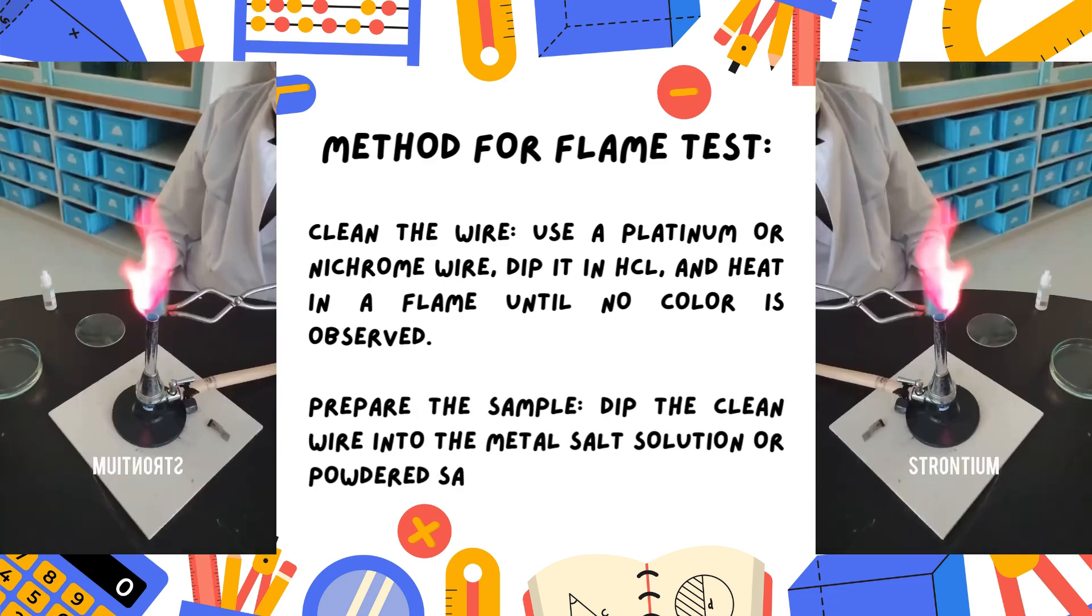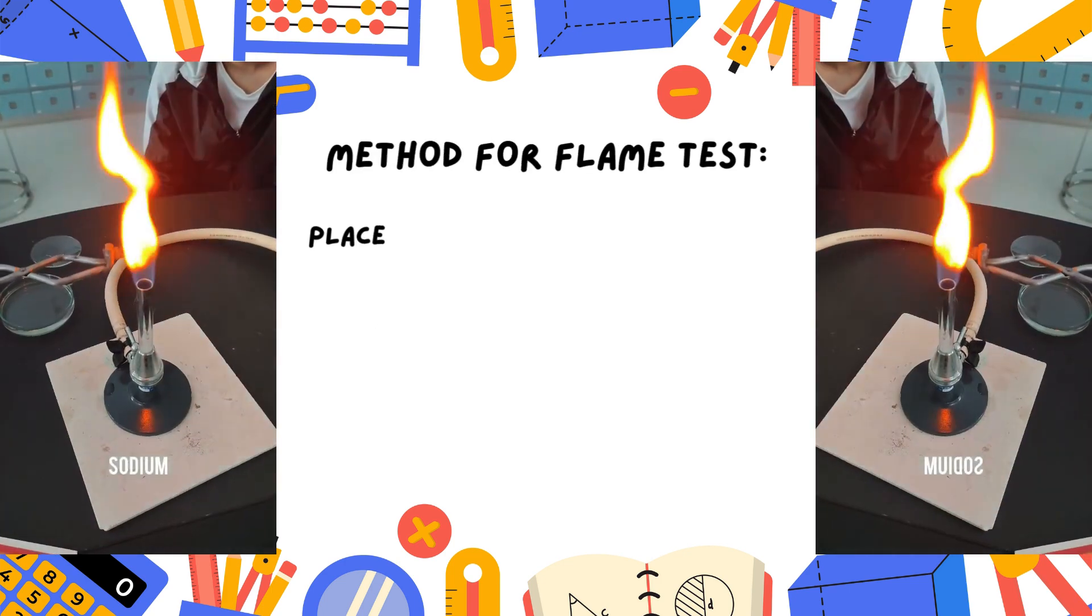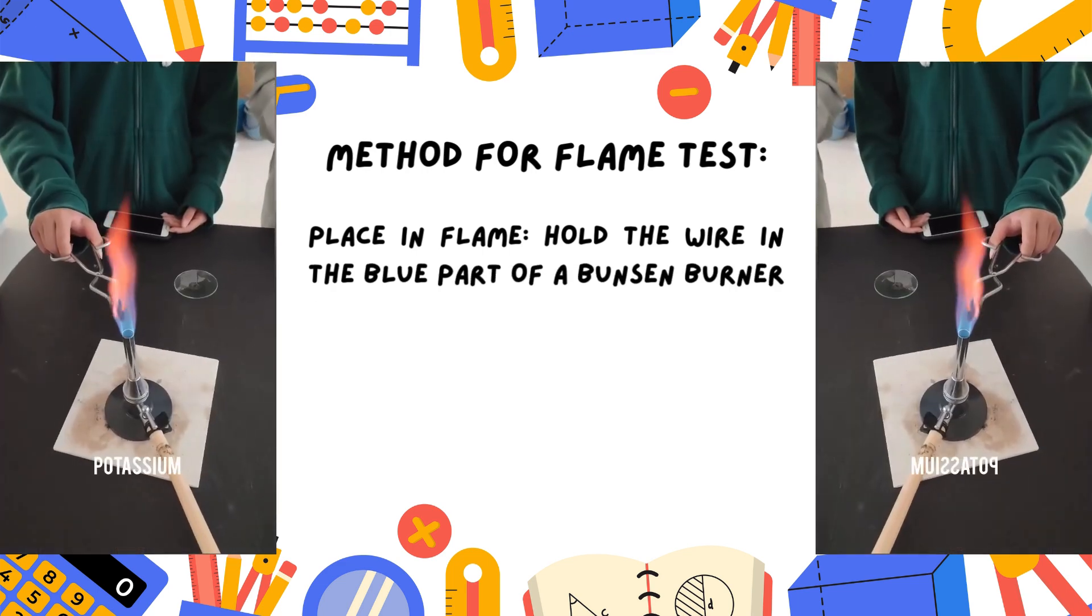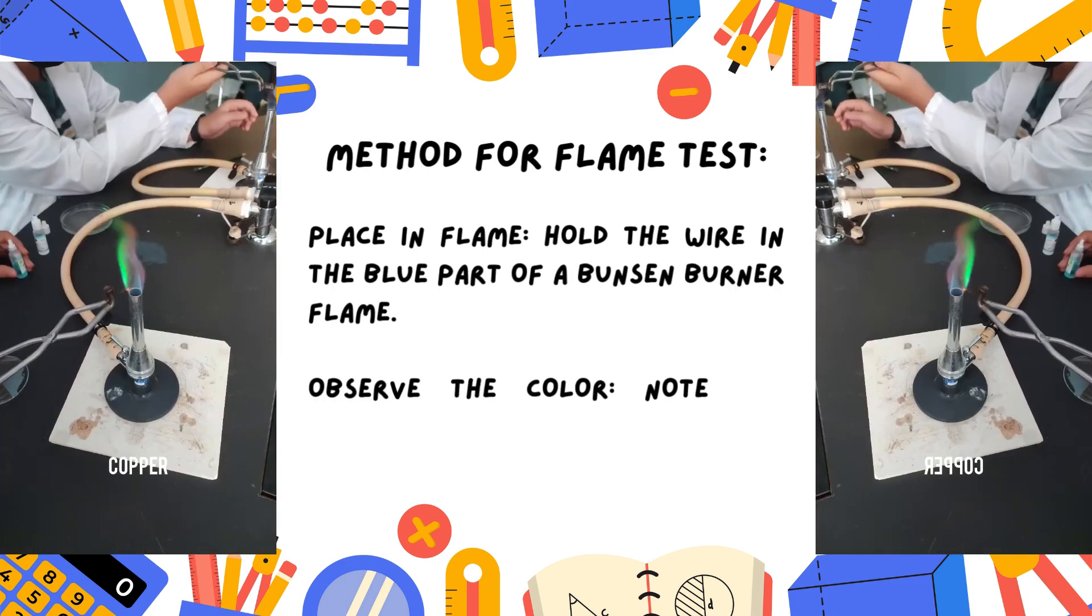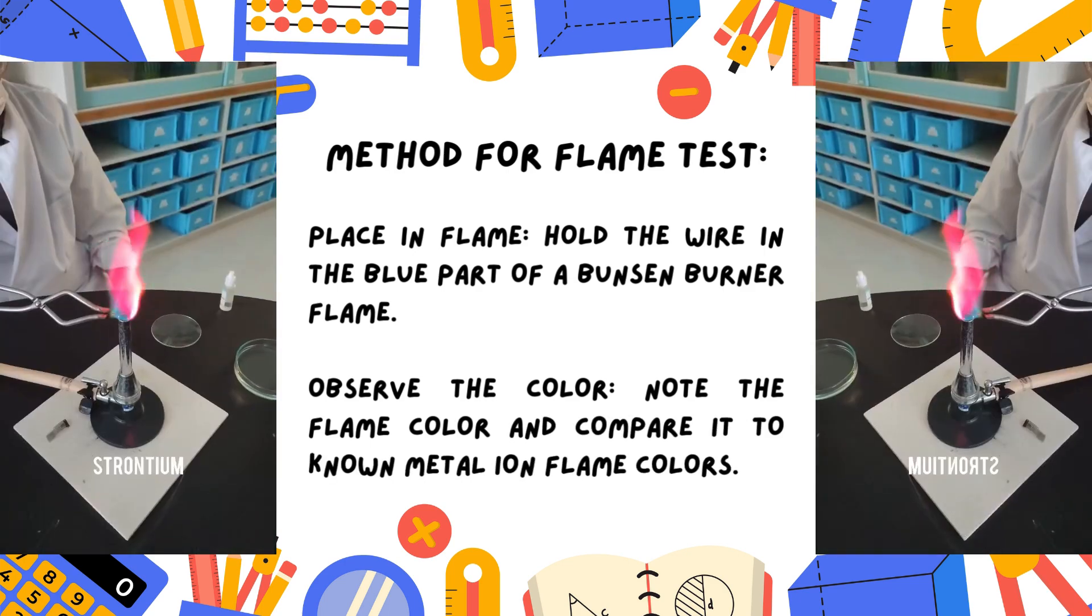Prepare the sample. Dip the clean wire into the metal salt solution or powdered sample. Place in flame. Hold the wire in the blue part of a Bunsen burner flame. Observe the color. Note the flame color and compare it to known metal ion flame colors.